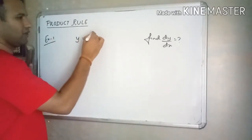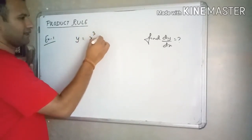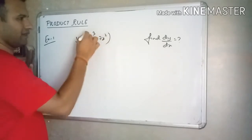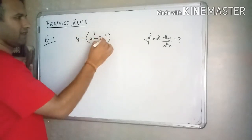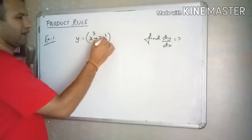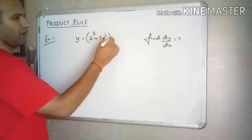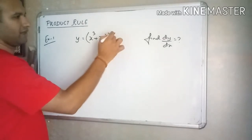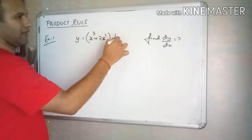Let us take a few more examples. The next example is: y is equal to x cube plus 7x square, into tan x. Applying the product rule with the first function as x cube plus 7x square and the second function as tan x.